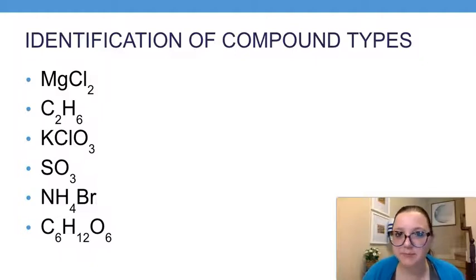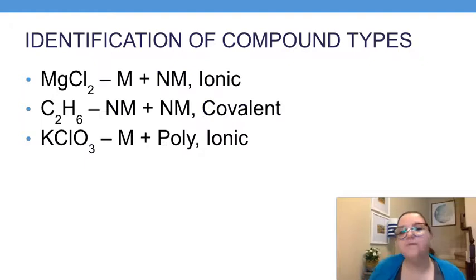Okay, did you pause it? Did you try it out? Let's see how we did. Our first three here: MgCl2, we have magnesium and chlorine together. Magnesium's a metal, chlorine is a non-metal, so that would more than likely be ionic. The next one, we have carbon and hydrogen, and both of those are non-metals, so that one would have been covalent.